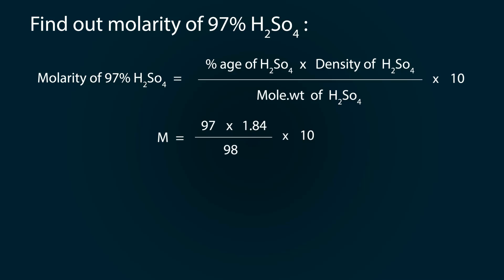Now convert it to normality. Normality equals molarity multiplied by acidity. So 18.2 × 2 equals 36.4.